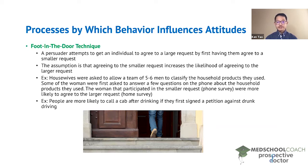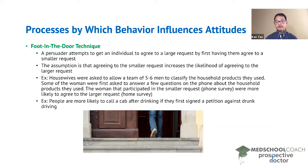As it turns out, the women that participated in the smaller request — the phone survey — were more likely to agree to the larger request, allowing the team of five or six men to enter their home, as compared to women that did not participate in the phone survey.